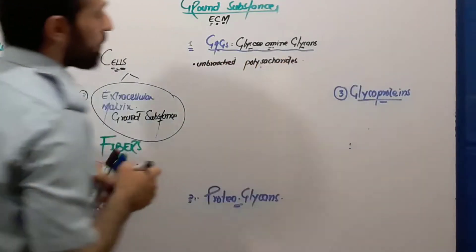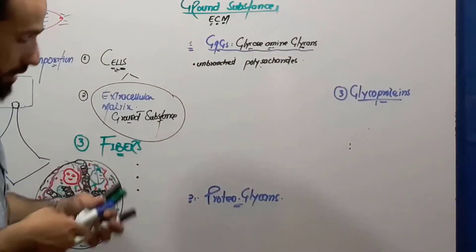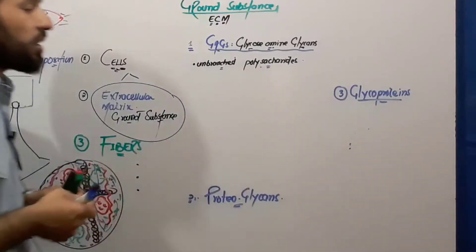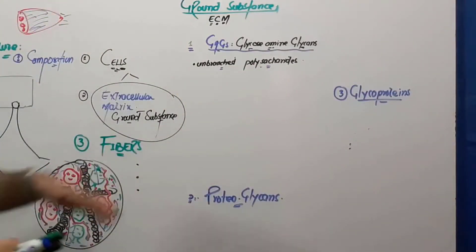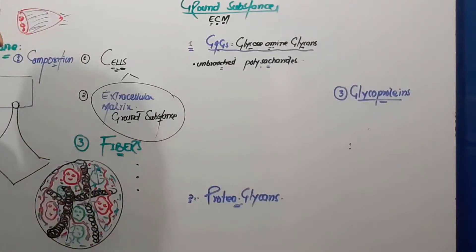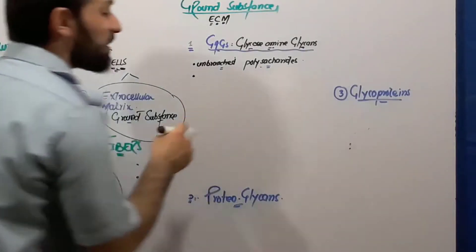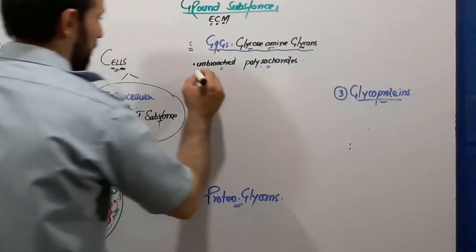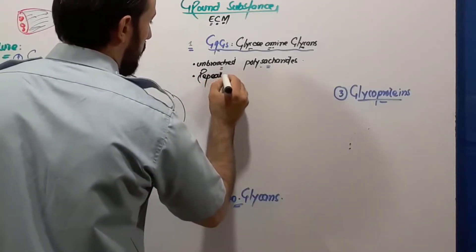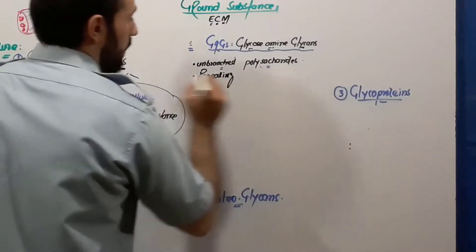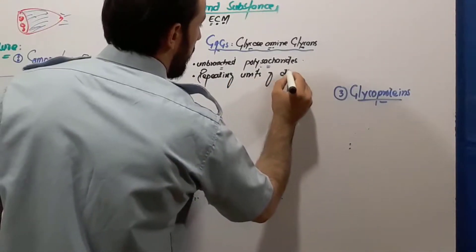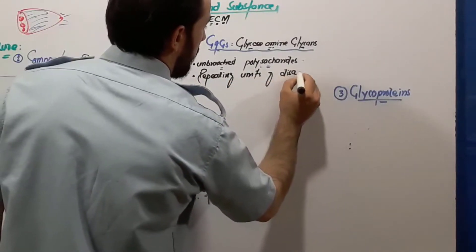Glycosaminoglycans — I told you they are carbohydrates, so we say they are polysaccharides. It means there are many monosaccharide units united together. They are made up of repeating units of disaccharides. I will draw the structure, do not worry.